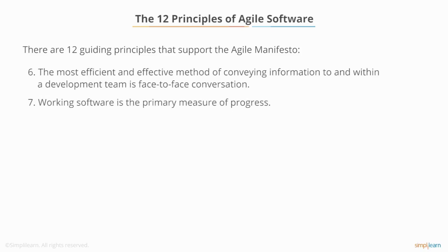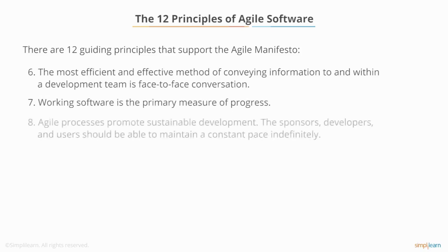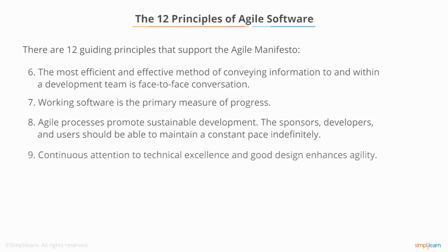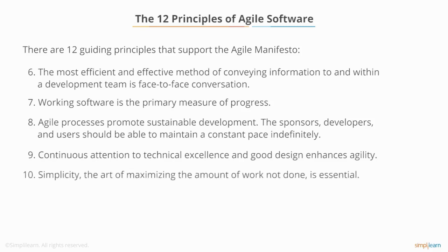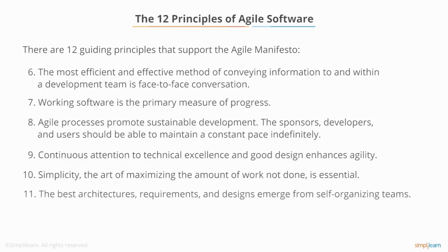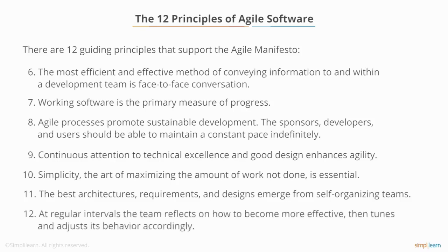Seven: working software is the primary measure of progress. Eight: Agile processes promote sustainable development — the sponsors, developers and users should be able to maintain a constant pace indefinitely. Nine: continuous attention to technical excellence and good design enhances agility. Ten: simplicity — the art of maximizing the amount of work not done is essential. Eleven: the best architectures, requirements and designs emerge from self-organizing teams. And twelve: at regular intervals, the team reflects on how to become more effective, then tunes and adjusts its behavior accordingly.